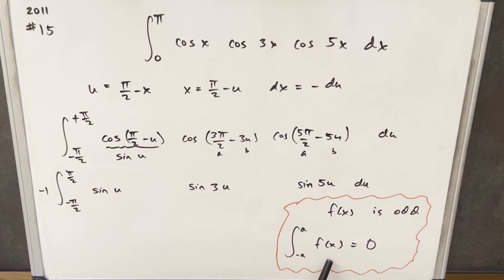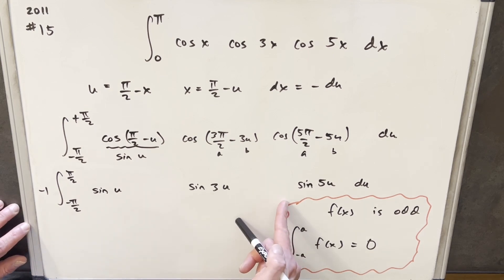Okay, so what I want to do is just use this nice property of an odd function. When we've got an odd function, and we're symmetrical around 0, like this, a to minus a, or minus a to a, the whole integral is 0. So really all we need to do is show that this whole thing is an odd function.